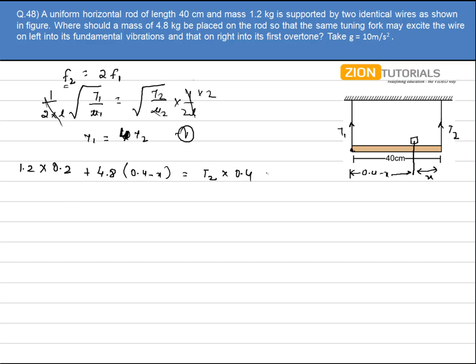And another equation what I can write is the equilibrium condition, that is t1 plus t2 is equal to 1.2 plus 4.8, so it is 6 is equal to t1 plus t2. So I can write t1 as 5 times of t2 is equal to 6.